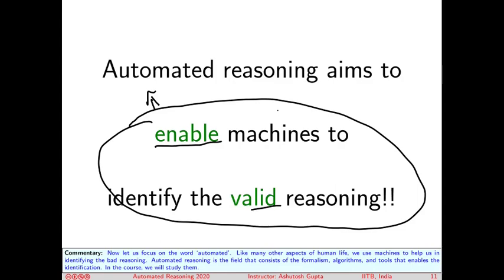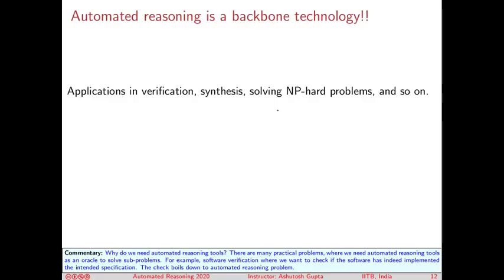It involves a lot of formalism, mathematical structures, algorithm development, then you also need tools, software development, and a whole range of things involved. You may still be asking, why do I care as a computer scientist? Where do I need such a tool to do my reasoning? Let me give you a few examples. It has huge applications in a lot of fields: software verification, synthesis, automated synthesis, and solving almost any problem that is hard - NP-hard problems. If it's hard, you need automated reasoning. It's a sort of backbone technology.